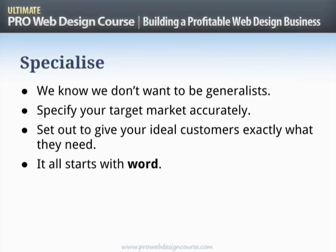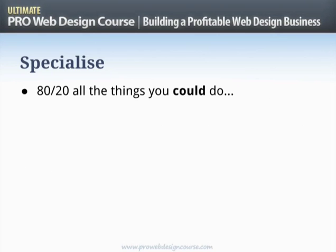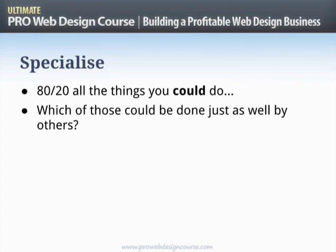It all starts with declaring that that is who you are — and then that is who you are. You can't wait to land a project like that in order to say it's what you do; you've got to start by being it. Applying 80/20 to all the things you could potentially do, some are more valuable and many are less. Ask yourself which of those things could be done just as well by other people — you don't want to be doing those things, because then you're in a competitive situation.